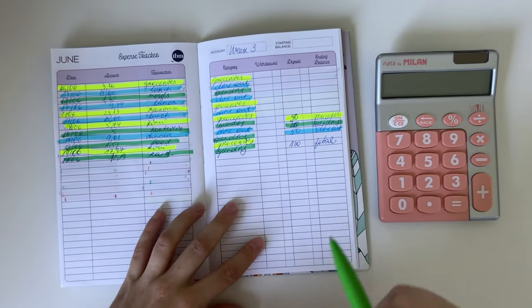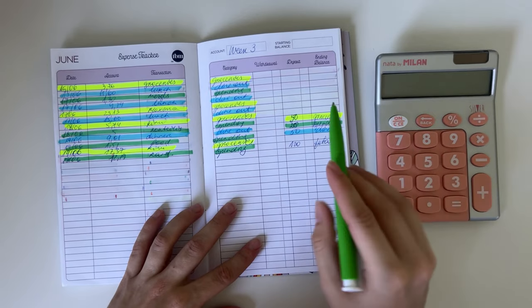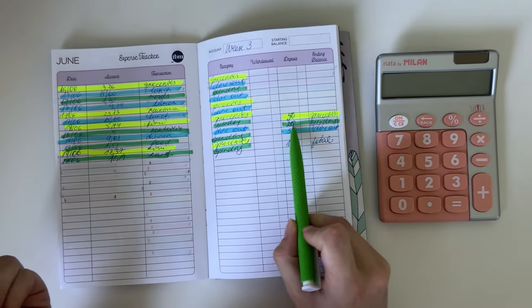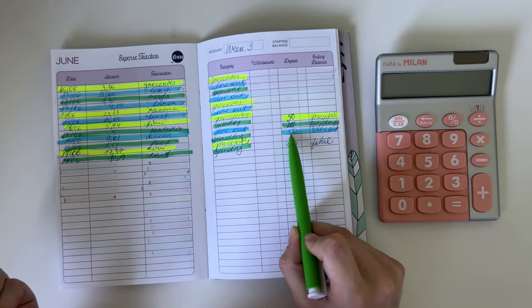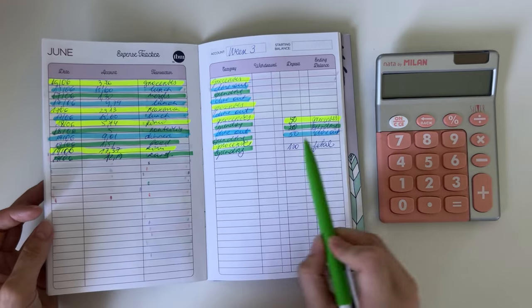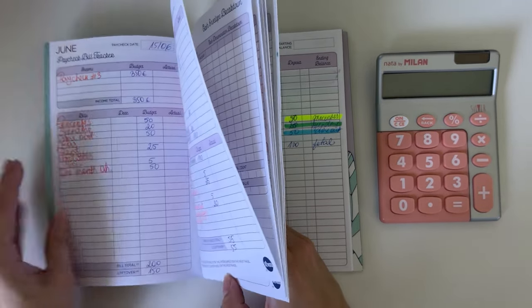Last week we didn't really have anything other than grocery spending and dine out. We spent everything in groceries, everything in spending, and everything in dine out. That was 50, 20, and 50 euros correspondingly, 120 euros in total. Let's quickly flip through.